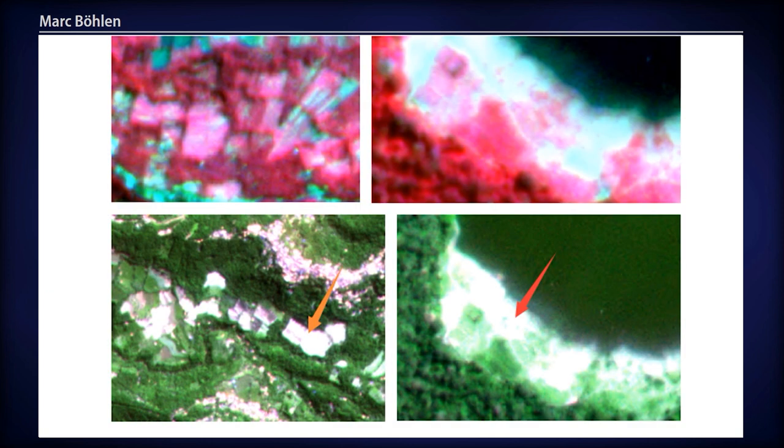The top two images show composite false color representations of water with grass on the right and rice paddies on the left. The bottom two true color images show settlement and grasslands adjacent to a body of water.